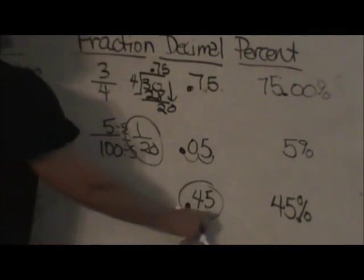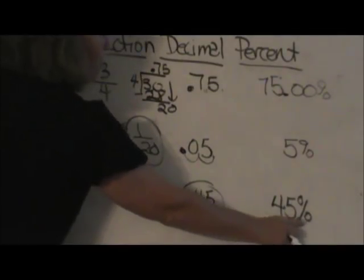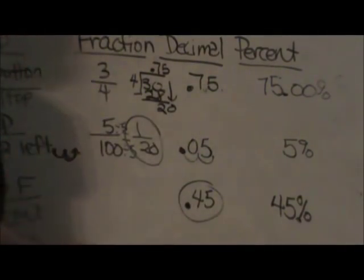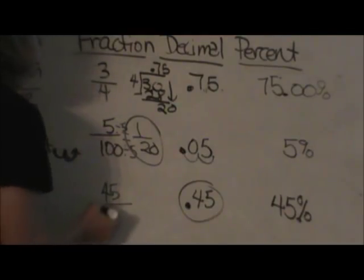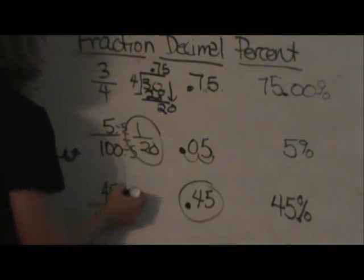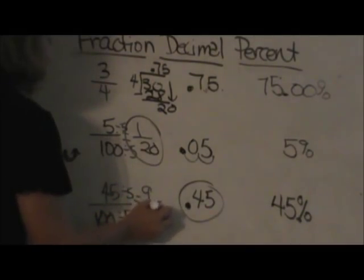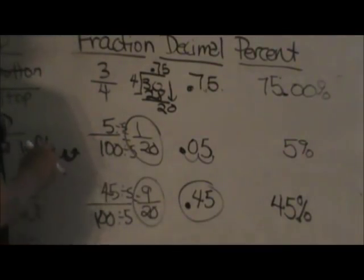So that makes it nice and easy. And then remember, forty-five percent means forty-five per one hundred. So forty-five divided by one hundred. And I can reduce that by five again. Which gives me nine over twenty. So there is my fraction.